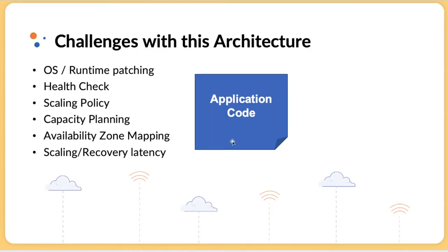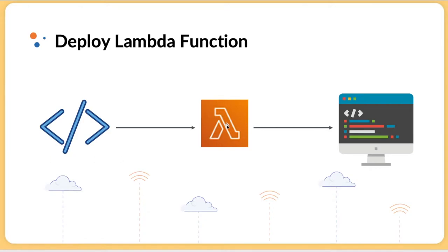In the serverless model, everything we previously managed — operating systems, health checks, scaling policies, Availability Zones, backup, recovery — will be taken care of by AWS. What we are going to do is zip our application code and send it to the Lambda function. Lambda will run your business logic whenever there is a request. That's it — it's that simple.